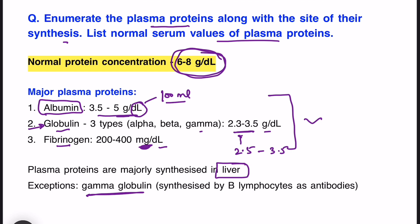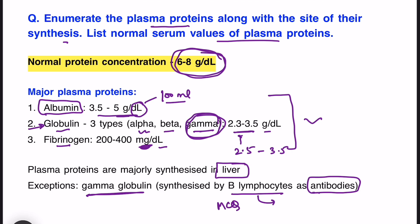The exception in this list is gamma globulin. Among the three types of globulin — alpha, beta, and gamma — it is gamma globulin which is produced by B lymphocytes. These are actually the antibodies, the immunoglobulins. So gamma globulins are synthesized by B lymphocytes. This is asked as an MCQ as well. The rest are synthesized in the liver.